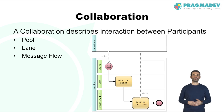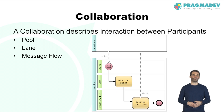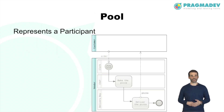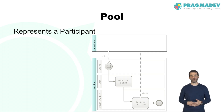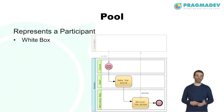A collaboration describes the interaction between participants, usually containing two or more pools representing those participants. A message exchange between participants is shown by message flows connecting the pools or elements within the pools. A pool is a graphical representation of a participant — which can be a specific partner entity or a general partner role such as a customer or vendor. A pool may be shown as a white box with all internal process details exposed, as with the vendor in this example.